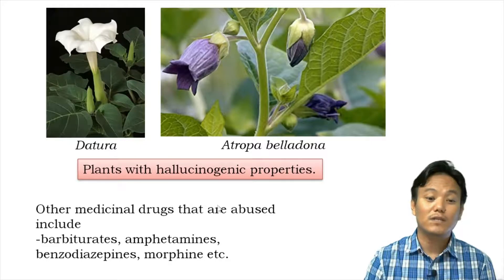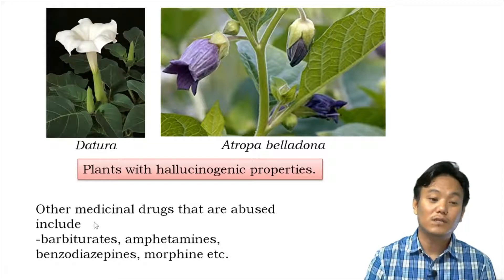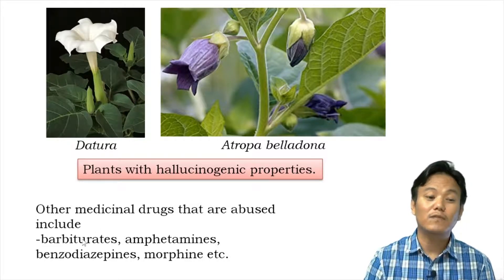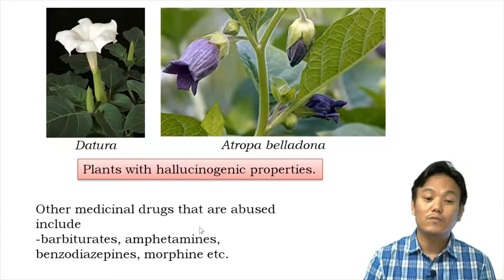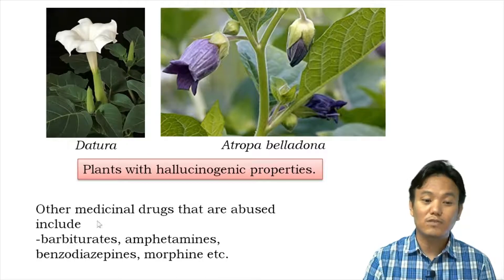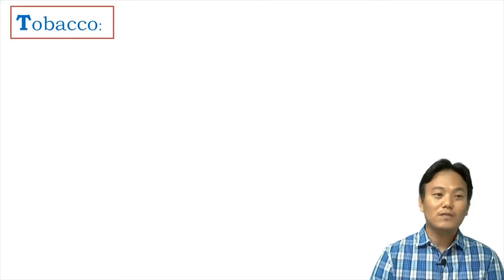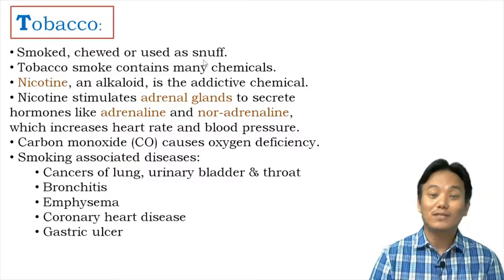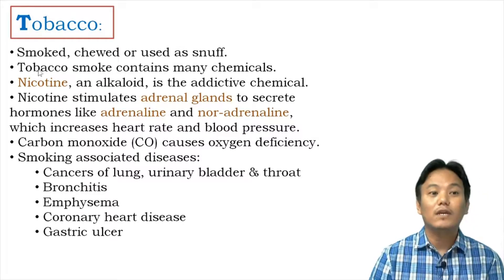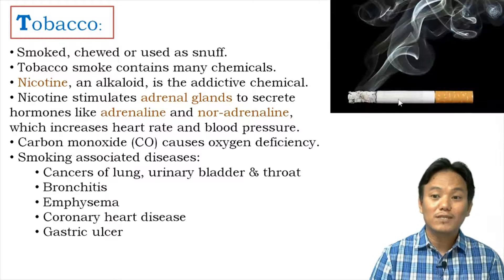Medicinal drugs like barbiturates, amphetamines, and benzodiazepines are prescribed for people undergoing chronic depression or those unable to sleep properly. Drugs like morphine are prescribed as painkillers for people who have undergone surgery. These medicinal drugs can also be abused. Tobacco is the most abused of all substances — obtained from tobacco plants and used by smoking, chewing, or as snuff taken through the nostrils.